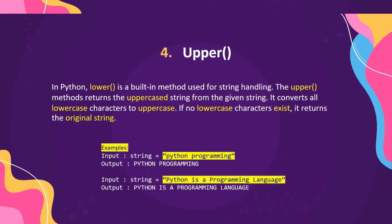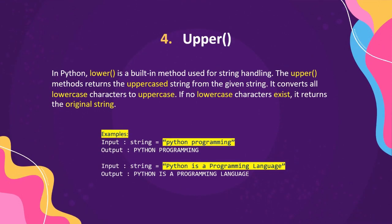The fourth method is upper. In Python, upper is a built-in method used for string handling. The upper method returns the uppercase string from the given string — it converts all lowercase characters to uppercase. If no lowercase character exists, it returns the original string. For example, with input string 'python programming' in all lowercase, it will convert all characters to uppercase.